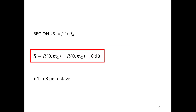In region three, we again get the sound reduction from mass one plus the sound reduction from mass two, but we get plus 6 dB instead of the other term, and this region ends up being 12 dB per octave instead of 18. Those are the general equations for all three zones.